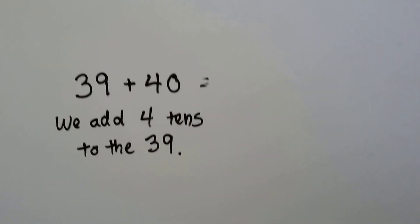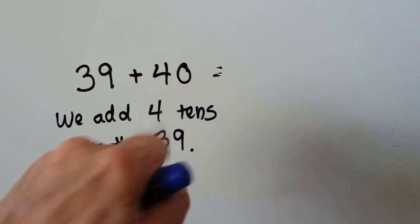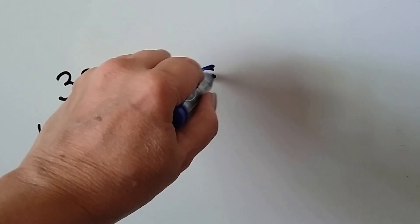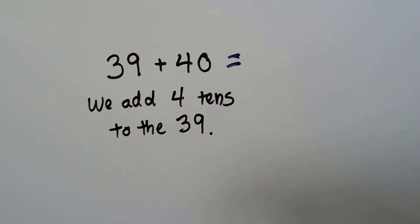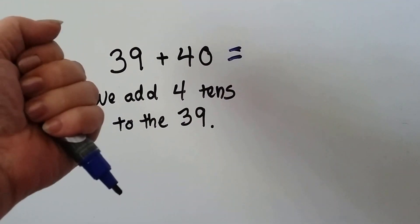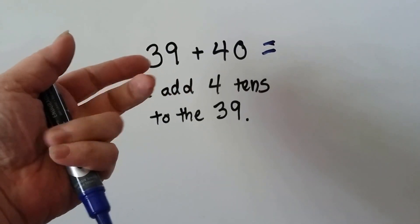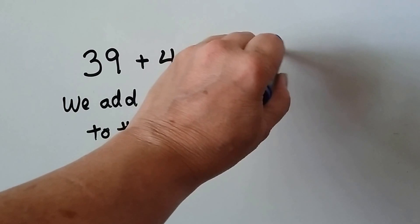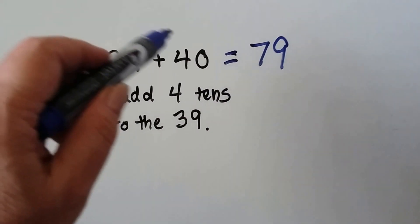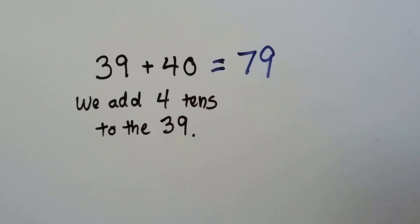Let's try it again. We've got 39 plus 40. We start at the 39 and add four tens to the 39. So we're going to do it four times. 39, 49, 59, 69, 79. The 3 plus the 4 is a 7, and the 9 plus the 0 is a 9.